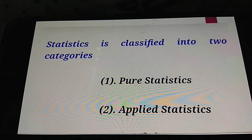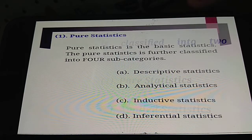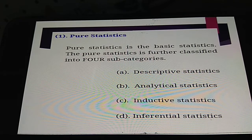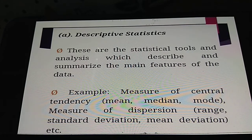Statistics is classified into two categories: the first is pure statistics and the second is applied statistics. Pure statistics is the basic statistics. Pure statistics is further classified into four subcategories: the first is descriptive statistics, the second is analytical statistics, the third is inductive statistics, and the fourth is inferential statistics.